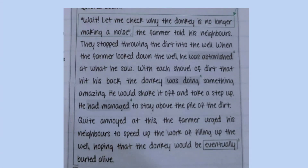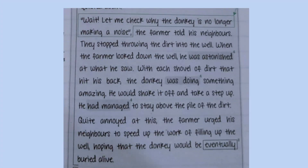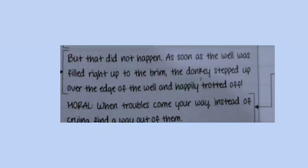The farmer told his neighbors to stop throwing dirt into the well. When the farmer looked down the well, he was astonished at what he saw. With each shovel of dirt that hit his back, the donkey was doing something amazing — he would shake it off and take a step up, managing to stay above the pile of dirt. Quite annoyed, the farmer urged his neighbors to speed up, hoping the donkey would eventually be buried alive. But that did not happen. As soon as the well was filled right up to the brim, the donkey stepped up over the edge of the well and happily trotted off.